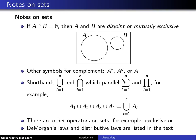Here are a few notes on sets. First of all, if A intersect B is phi, the empty set, then A and B are known as disjoint or mutually exclusive. And as you can see in the Venn diagram below, there is no overlap between the two. Their intersection is the null set.